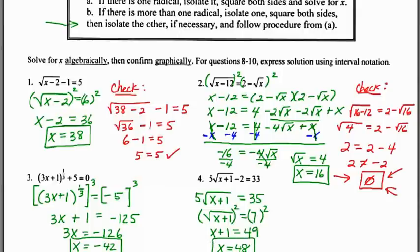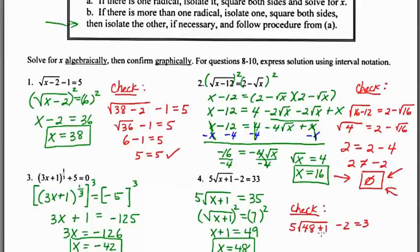Now for the check: 5√(48+1) − 2 = 33. 48 + 1 = 49, and the principal square root of 49 is 7. Five times 7 is 35, and 35 − 2 = 33. Sure enough, 33 = 33, so the answer checks and x = 48.